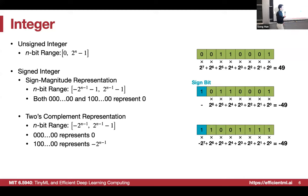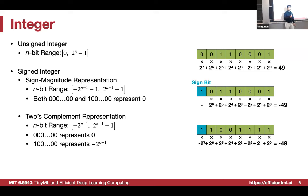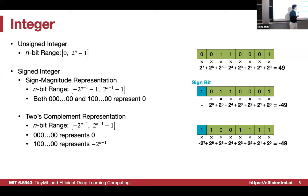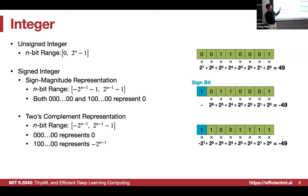If you've learned 6.004, this should be familiar. The lowest bit is 2 to the power of 0, then 2¹, 2², and you sum them to find the unsigned integer. The signed integer allocates one bit as the sign bit, indicating positive or negative; the remaining bits sum to the value. This wastes one slot, since both all-zeros and 1-followed-by-all-zeros represent 0.